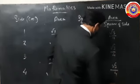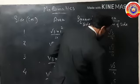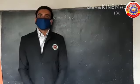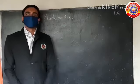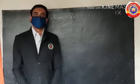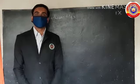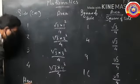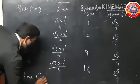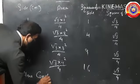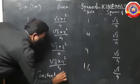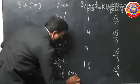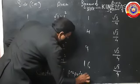For equilateral triangles, the area is proportional to the square of the length of a side. Here the constant of proportionality is equal to √3/4.